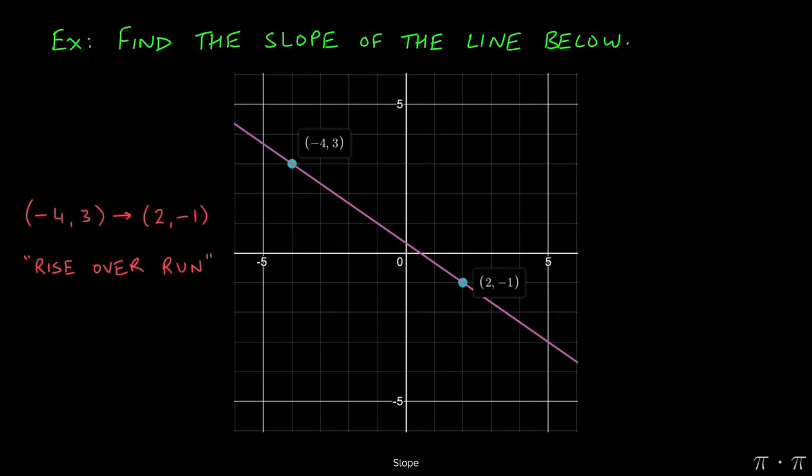Now there's two ways to look at this line. We can either look at it from left to right, which is the way you really want to look at graphs moving forward, but the slope of the line will not change regardless of which direction we go in. So let's say we choose to go from negative 4 comma 3 in the direction of 2 comma negative 1.